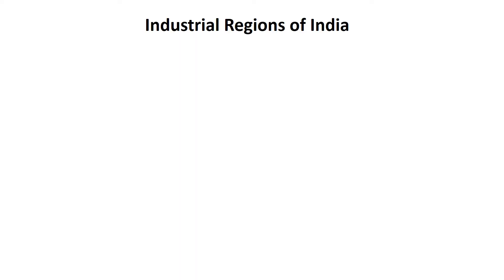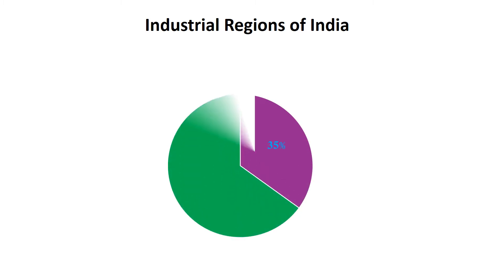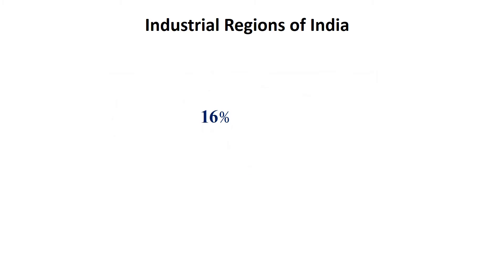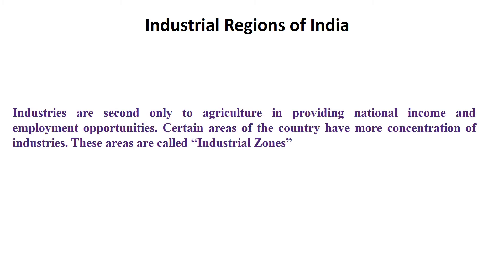Industrial regions of India. Industries provide 35% of the total national income, besides providing employment to 16% of the population. Industries are second only to agriculture in providing national income and employment opportunities. Certain areas of the country have more concentration of industries, and these areas are called industrial zones.